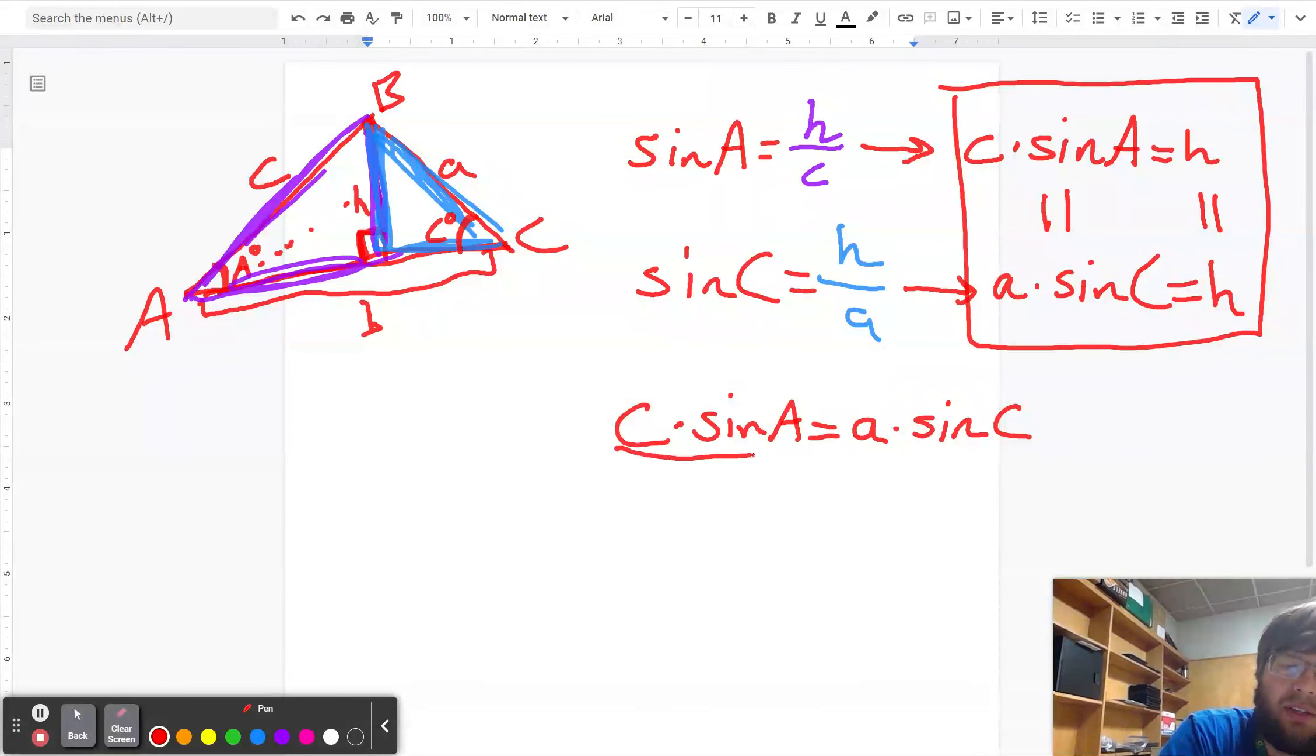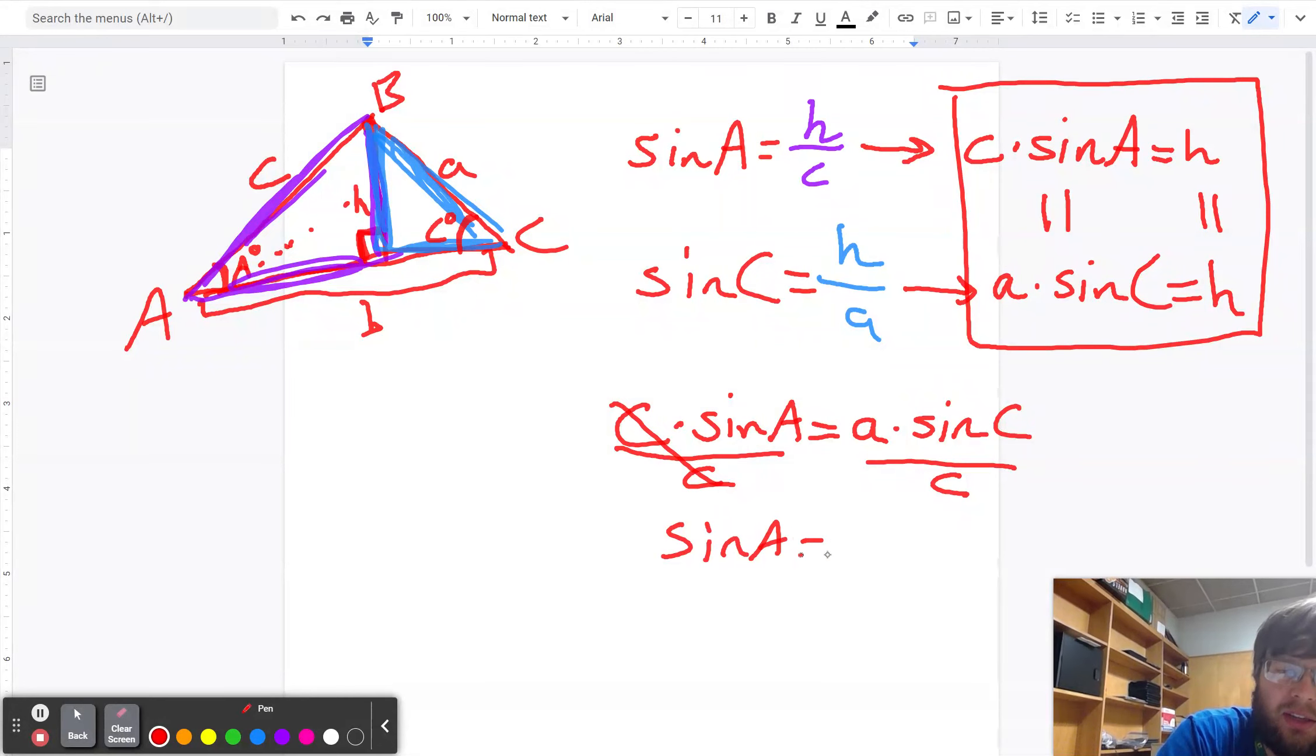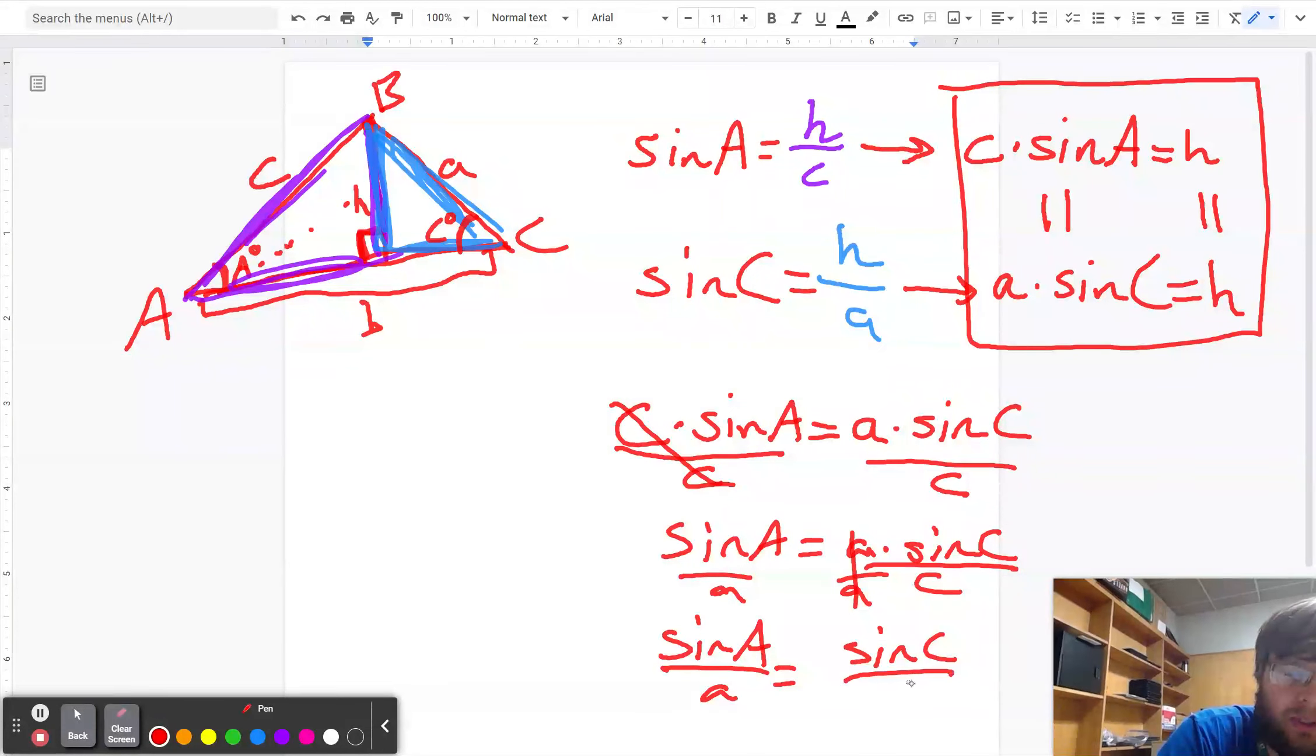And typically, you're going to encounter this with the letters on the same side of the equation. So I'm dividing by C. So I have sine of A equals A times sine of C over C. And then I divide by A. So I have this. Sine of A over A equals sine of C over C.